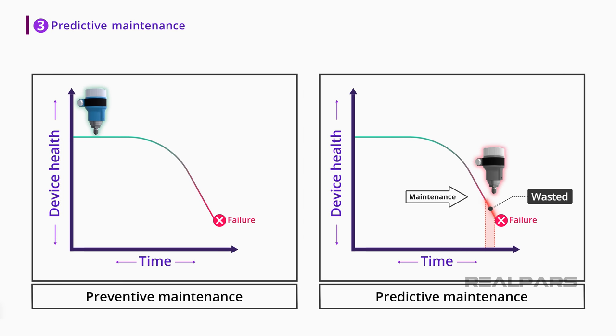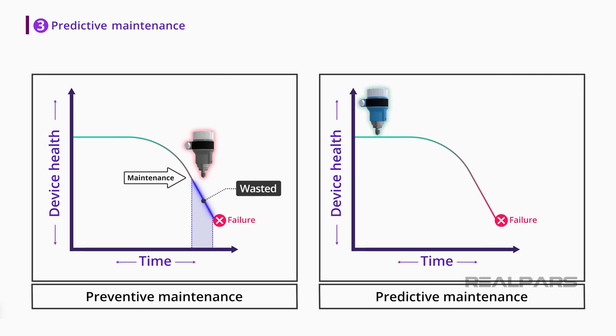So with preventive maintenance, you solve the downtime issue and prevent it from happening, but you lose on device lifetime, meaning the time you could use the device without any issue. However, with predictive maintenance, not only can you solve the device downtime issue, but there will also be little to no wasted device lifetime.